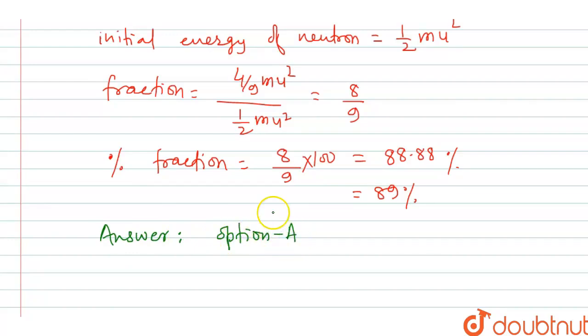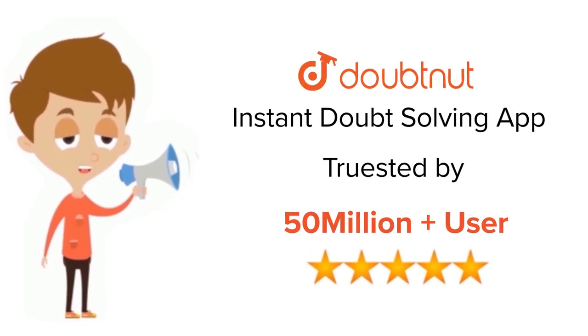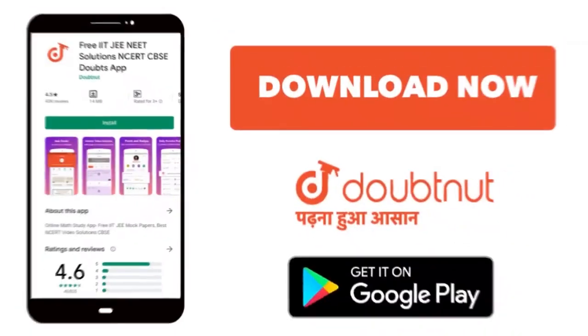Option A. Okay, this was the explanation. Hope you understood it. Bye bye. For class 6 to 12, IIT-JEE, and NEET level, trusted by more than 5 crore students, download Doubtnet app today.